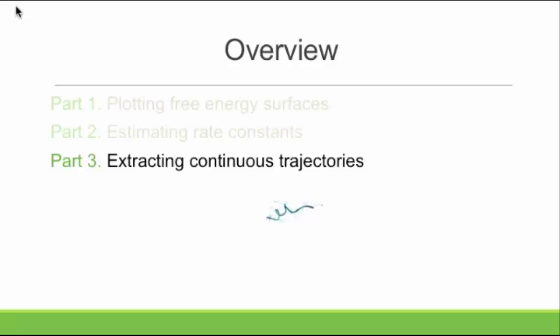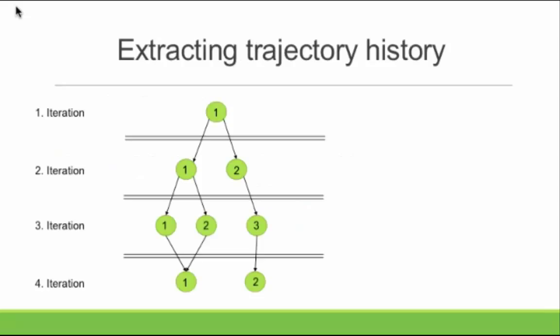I want to finally talk about extracting trajectories. This is just a cartoon showing the full file tree — four iterations of weighted ensemble. You're starting from a basis state, falling down, splitting into two, then merging. Each trajectory has only one history parent. So tracing down is difficult because of the branches, but tracing up is very easy because you only have one parent at all times. What I'm going to do is trace a particular trajectory up until I hit the original parent.